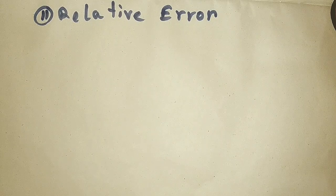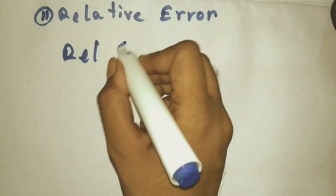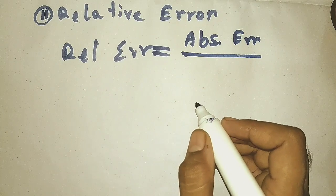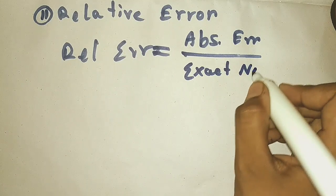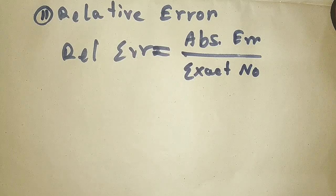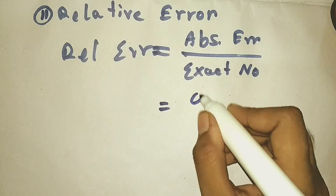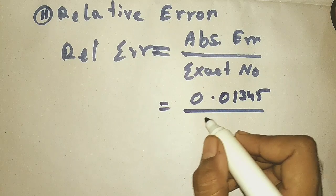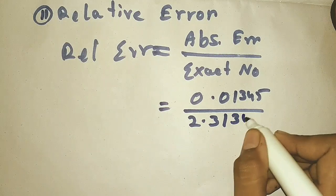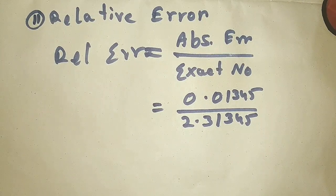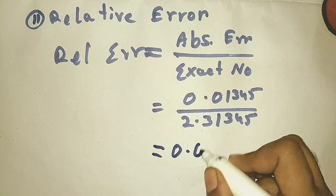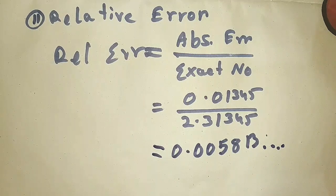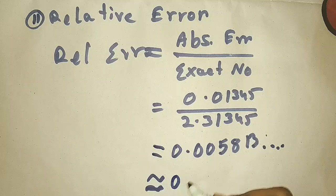Now what is the relative error? Relative error is the absolute error divided by the exact number — take the mod value, since errors are always positive. With our example, the absolute error was 0.01345; divide it by the exact number, which was 2.31345. Calculating with a calculator gives approximately 0.0058. It is also an infinite decimal number, so we round it off to a certain decimal place. This is the relative error.